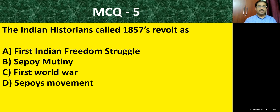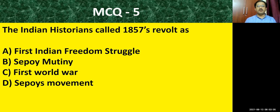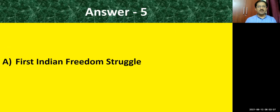MCQ question number five: the Indian historians called the 1857 revolt as — you know very well. Earlier I discussed about British historians; now it is Indian historians. Indian historians called the 1857 revolt as the first Indian freedom struggle.